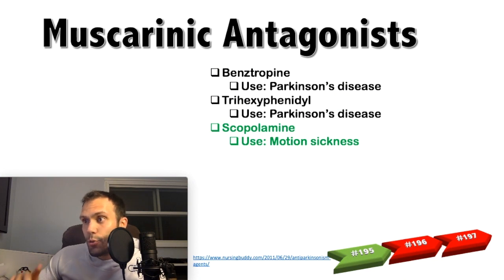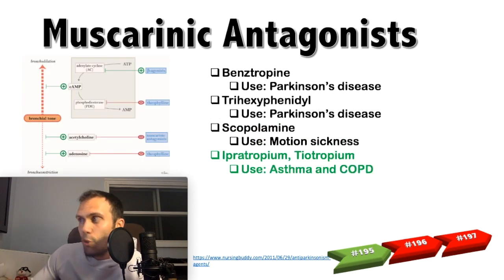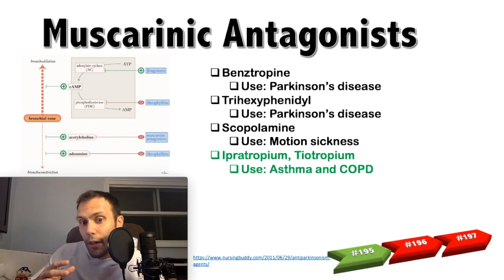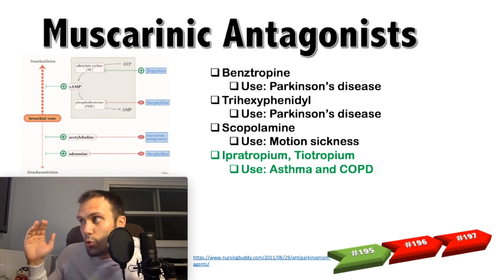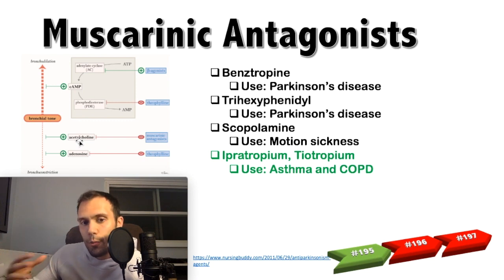Scopolamine is used for motion sickness — it has a fast onset and is typically administered as a patch. Ipratropium and tiotropium are both used in asthma and COPD. On the cholinergic side, acetylcholine causes bronchoconstriction, which is undesirable in an asthma or COPD exacerbation. Using muscarinic antagonists inhibits acetylcholine and allows bronchodilation.